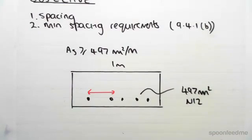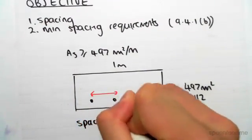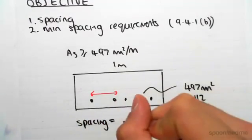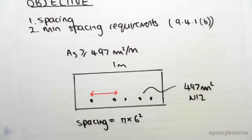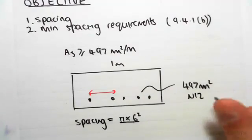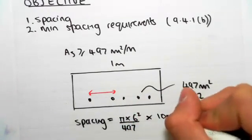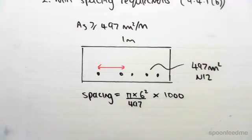So the way we do that is we have the spacing is simply equal to the area of a single N12 bar, so pi times 6 squared, pi r squared, divided by the total area per meter, 497, and then we just multiply that by a meter length. So that little formula there will work out the spacing for us.